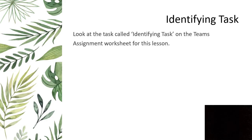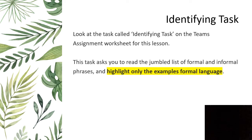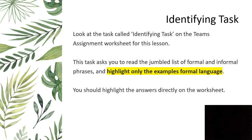The first task on your worksheet after the starter task is called the identifying task. You'll see it labelled exactly the same way on the assignment worksheet. What it's asking you to do is read a jumbled list of formal and informal phrases and highlight only the examples of formal language. You can highlight directly onto the worksheet — it should be nice and quick and straightforward. Pause the video and have a go at that one now.